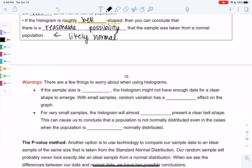A few things to worry about with histograms. If the sample size is small the histogram might not have enough data for a clear shape to emerge and sometimes we can be wrong. With small samples random variation has a large effect on the graph. It can just be really hard to tell the shape. For very small samples the histogram almost never shows shape. If you only have like 10 data values it almost never presents a clear bell shape and this can make us make the wrong conclusion. This can cause us to conclude that a population is not normally distributed even in cases when it actually is normal. So be cautious of small sample sizes.